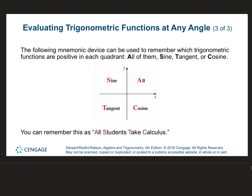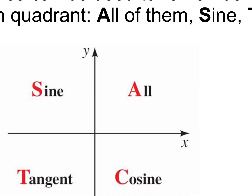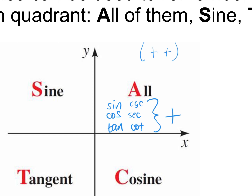Here's a mnemonic device. Like PEMDAS — 'Please Excuse My Dear Aunt Sally' — this one is 'All Students Take Calculus.' This tells you where trig functions are positive and negative. In the first quadrant, all trig functions — sine, cosine, tangent, along with their reciprocals cosecant, secant, and cotangent — are all positive. The signs of X and Y in quadrant one are both positive.